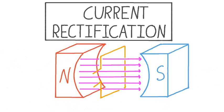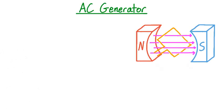To understand how commutators rectify alternating current, let's start by reviewing the operation of a simple alternating current generator. A simple alternating current generator consists of a wire loop rotating in a uniform magnetic field between two magnets. As the loop rotates, the total magnetic field passing through the loop — also known as the magnetic flux — changes with time, which induces a current in the loop.